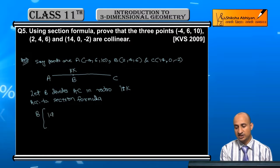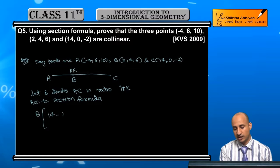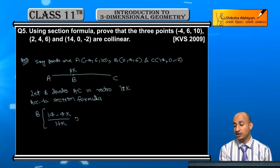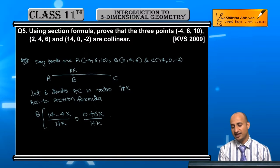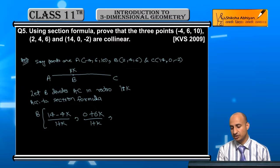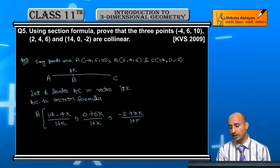14 plus k into -4, this is -4k upon 1 plus k. Similarly, 1 into 0, this will be 0 and k into 6, this will be 6k upon 1 plus k. And next will be 1 into -2, this is -2, and k into 10, this is 10k upon 1 plus k. So this will be B's coordinate.